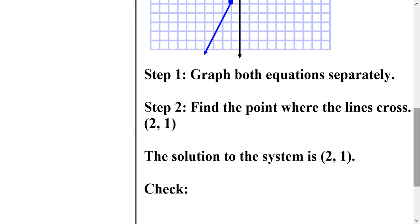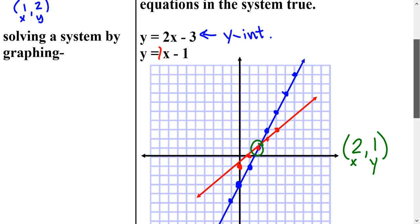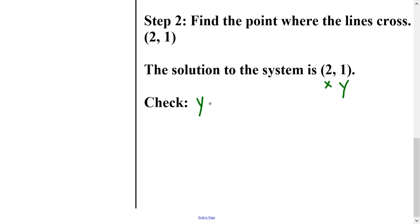So what we did was we graphed both equations separately. We found the point where the lines cross. And then we found the solution. So our check is to plug in 2 for x and 1 for y. So if I go back up to my system, I had y = 2x - 3 and y = x - 1.